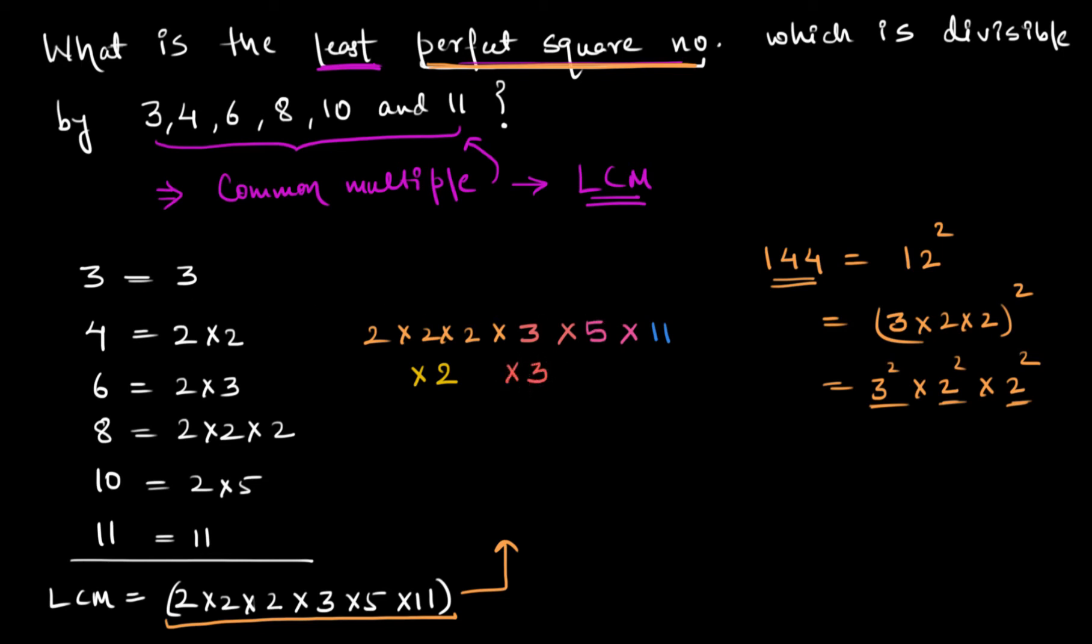There is just one 5 here, so in order to make it even number of 5s, I will multiply it by one more 5. And since there is only one 11 here, I will multiply this by one more 11, so that I have everything in even quantity.